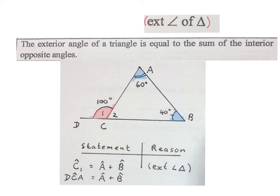Looking at this example, if that exterior angle is 100 degrees, then those two angles together will also be 100 degrees. For instance, 60 plus 40 is 100. Exterior angle of triangle.